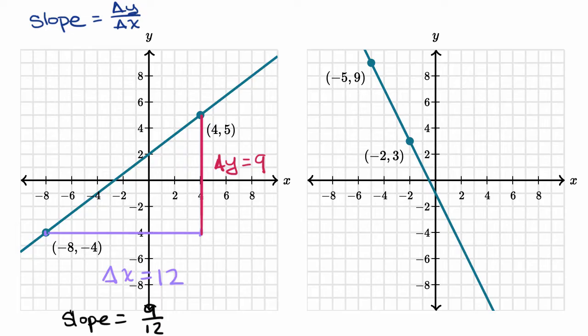But let's see if that's true if we pick some other points on this line. So let's say I were to pick, and I'm gonna pick some points where I can clearly see the coordinates. So let's say that point right over there, and the coordinates there. Let's see, x is negative four,